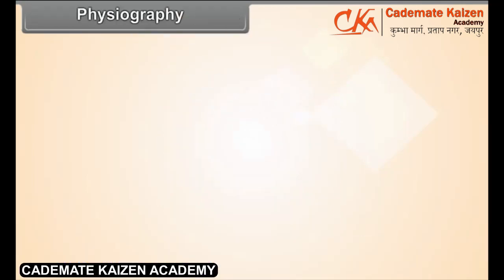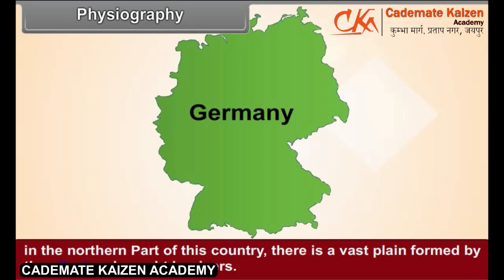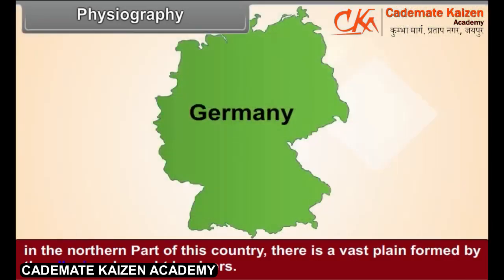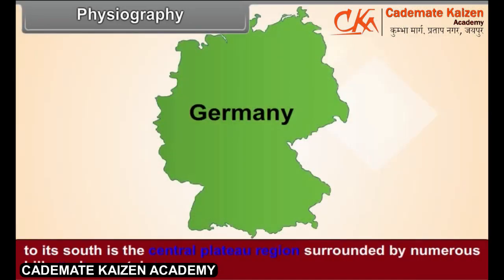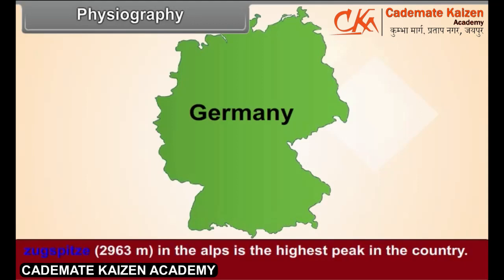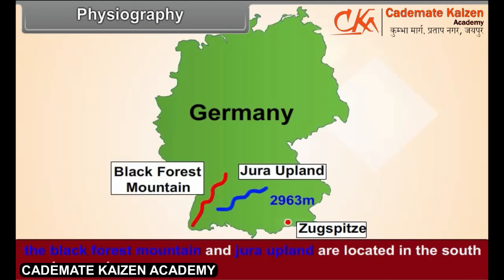Physiography. In the northern part of this country, there is a vast plain formed by the alluvium brought by rivers. To its south is the central plateau region surrounded by numerous hills and mountains. A part of the Alps Mountains appears along the southern boundary of the country. Zugspitze, at 2,963 meters, in the Alps is the highest peak in the country. The Black Forest Mountain and Jura Upland are located in the southwestern part.